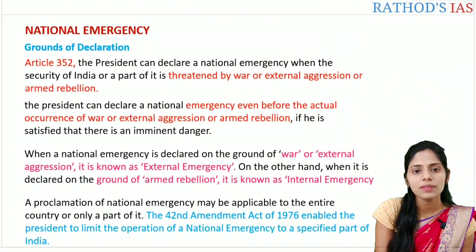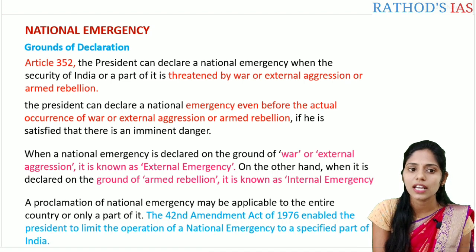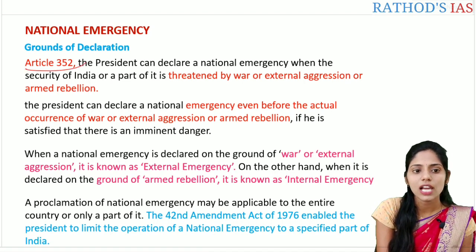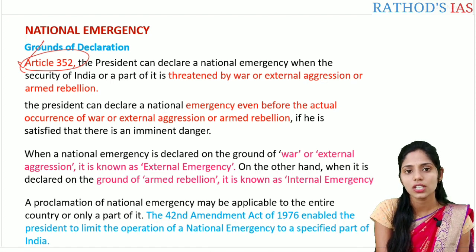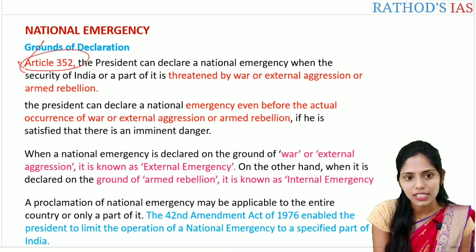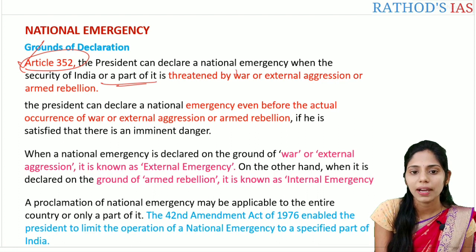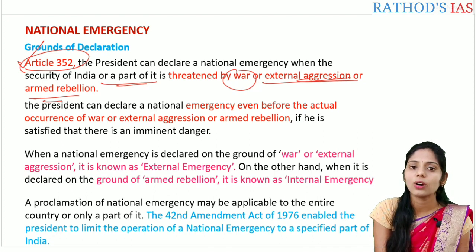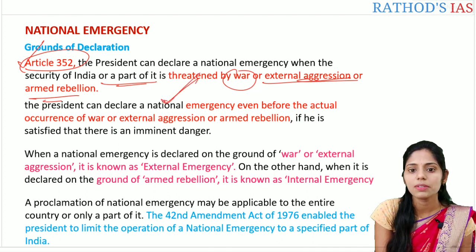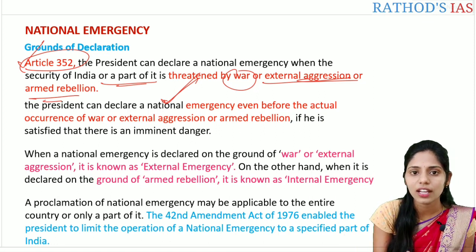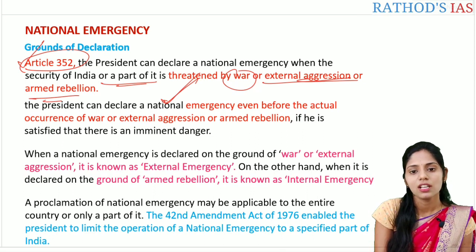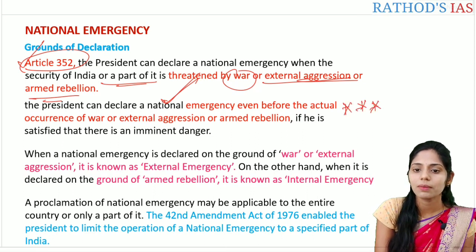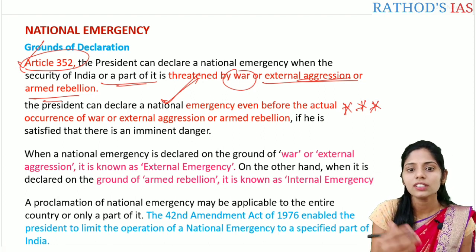Let us see the grounds of declaration for national emergency. Article 352 of the Indian constitution talks about the president declaring a national emergency when the security of India or a part of it is threatened by war, external aggression, or armed rebellion. The president can declare national emergency even before the actual occurrence of war, external aggression, or armed rebellion — whenever the president is satisfied on these grounds.